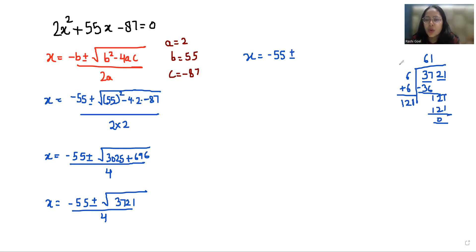So this is the square of 61, so we can write in place of 61 by 4. So x1 is negative 55 plus 61 by 4. So negative 55 plus 61 is 6 by 4, which is 3 by 2.